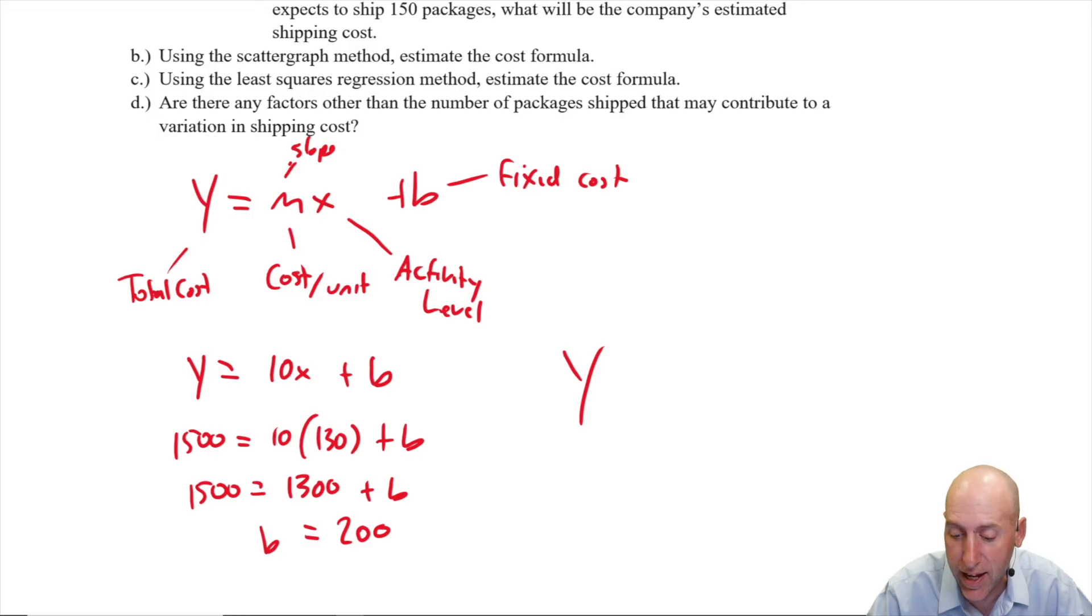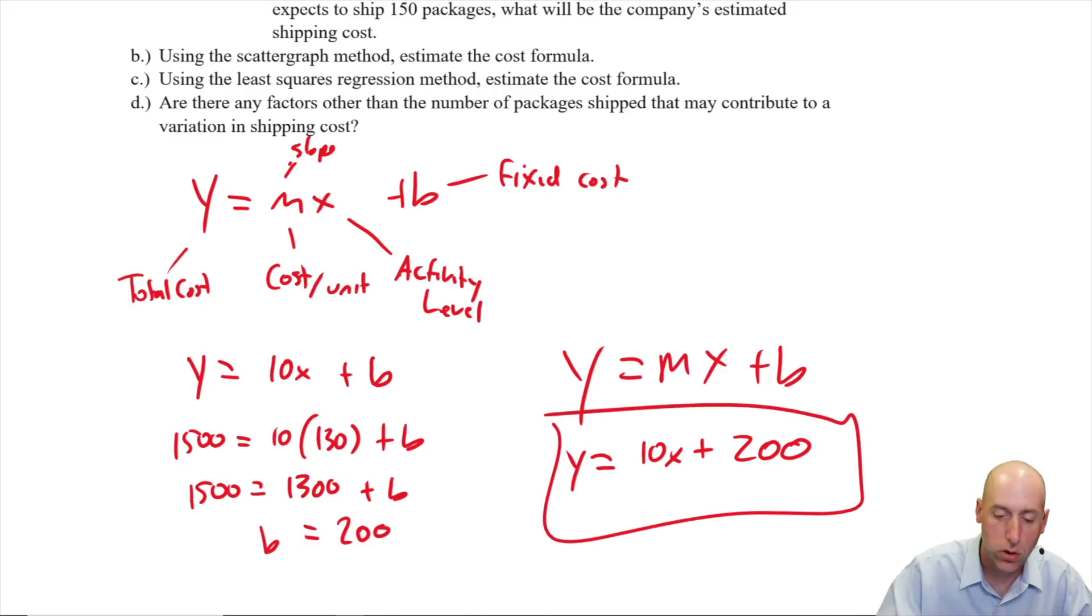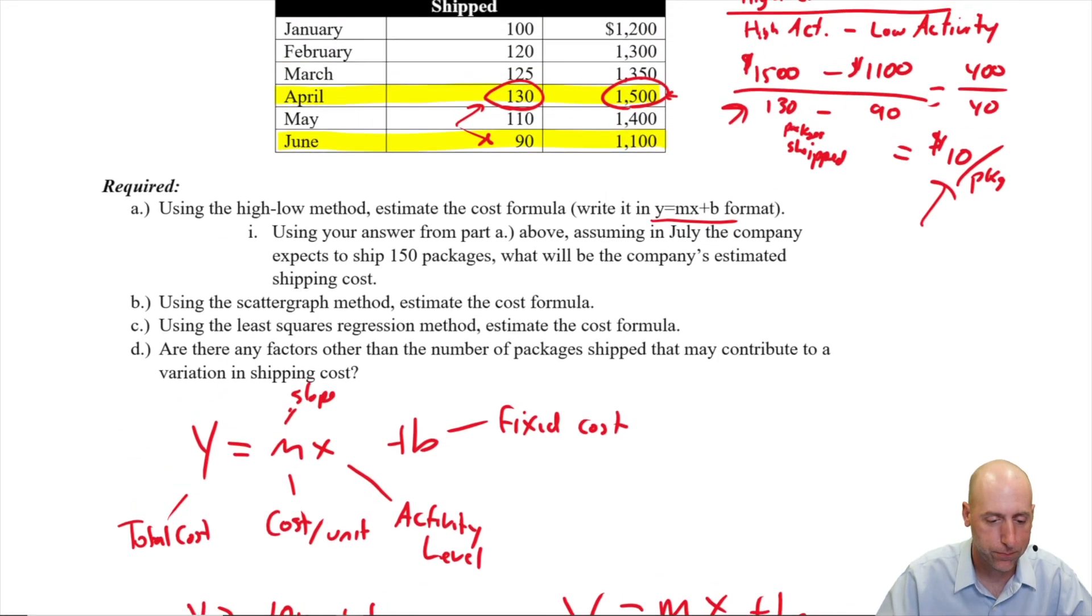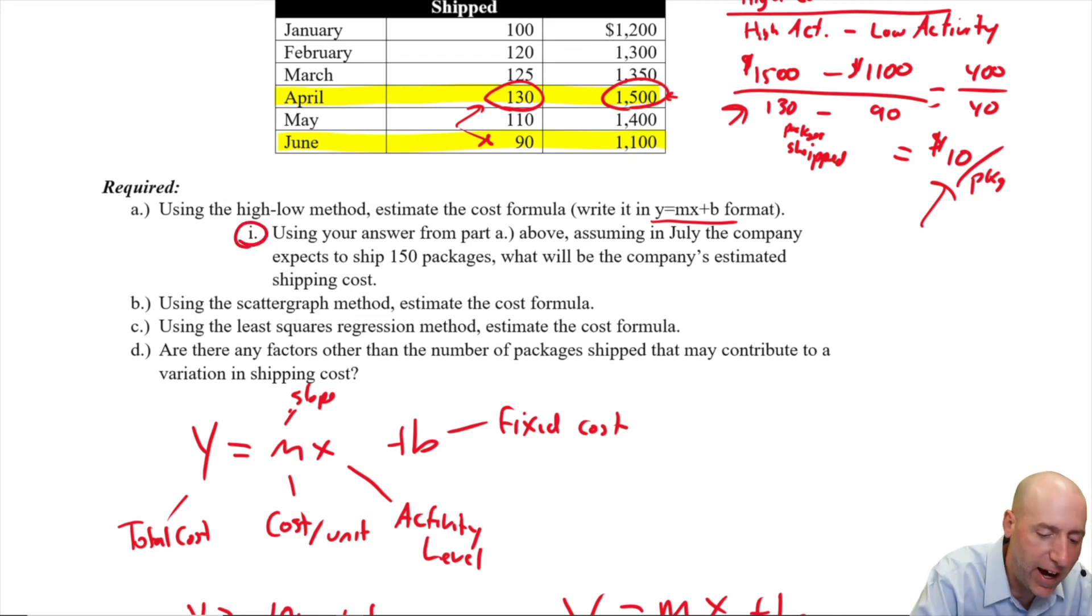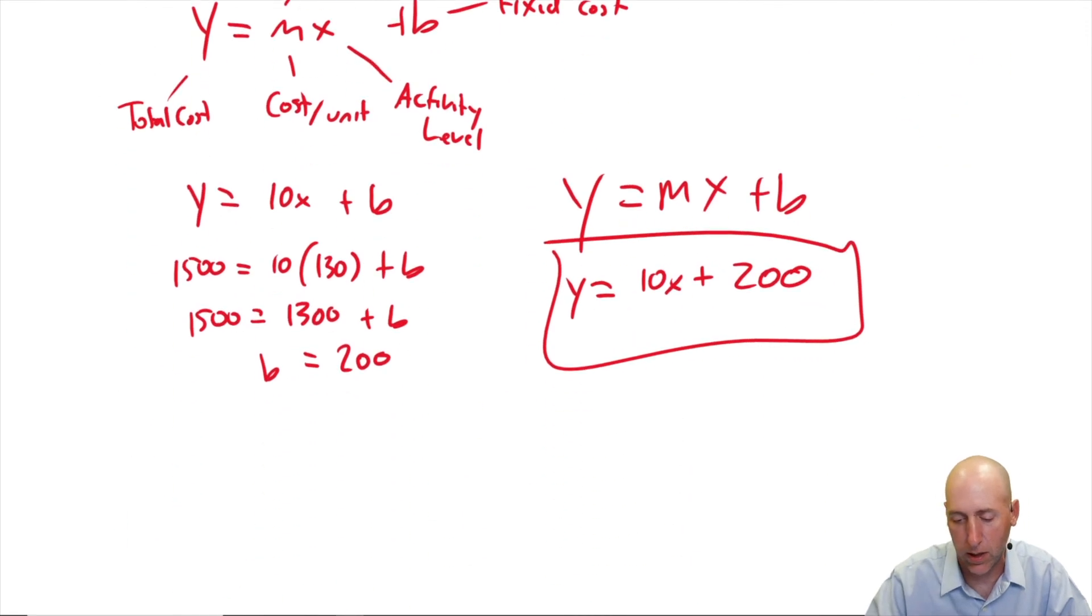So my formula for the line, my answer for part one here, part a, y equals mx plus b, y equals 10x plus 200. That's the answer to part a. Part ai says, using your answer from part a above, assume the company expects to ship 150 packages. What's the estimated shipping cost?